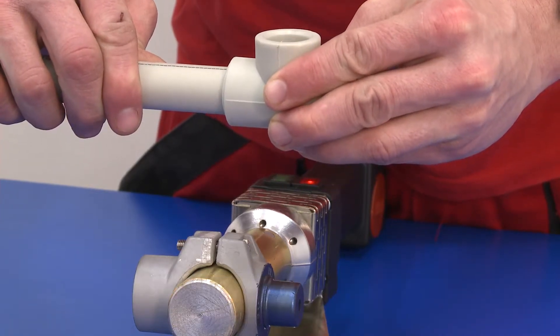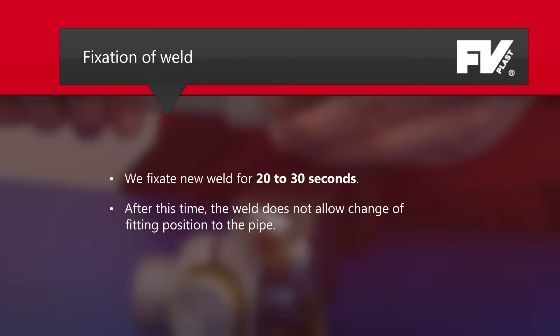The new weld must be fixed for 20 to 30 seconds when a partial cooling occurs. After this time the weld does not allow change of position or fitting to the pipe.